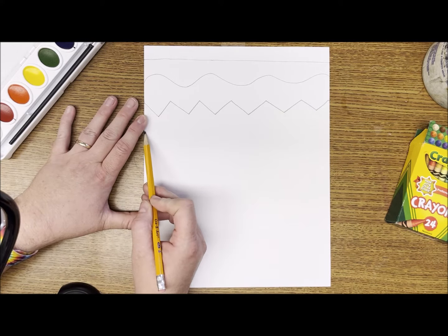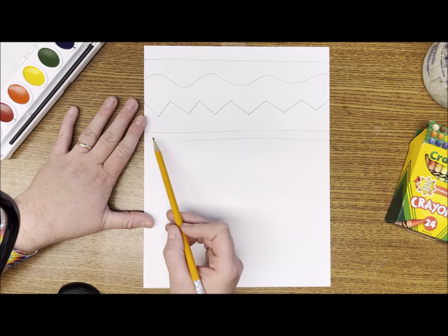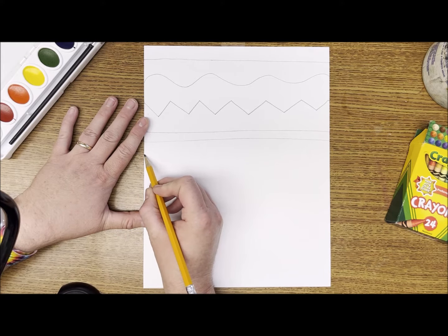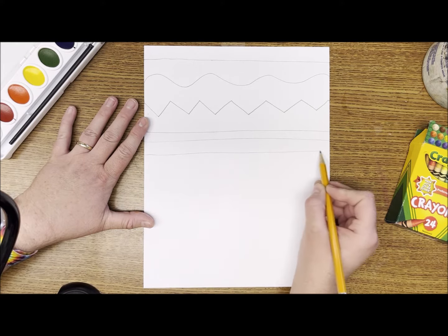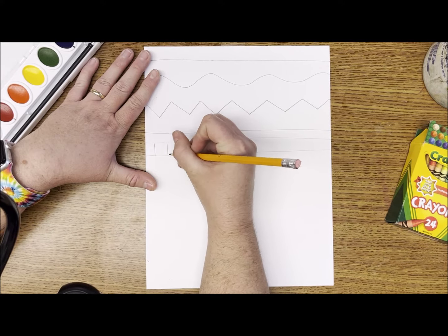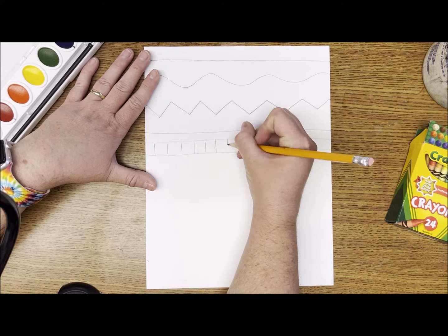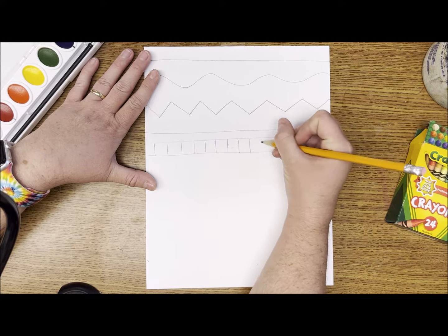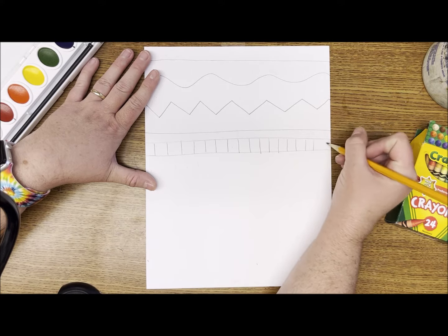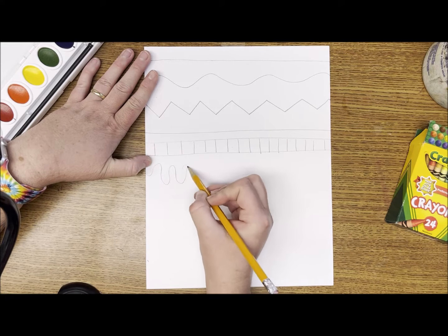Next we're going to draw a thick line, and to do this I'll draw two lines parallel to each other and then later we'll color that in with crayon. Next, the opposite of thick is a thin line. With just the point of my pencil, I'm going to draw some short lines in between my thick and thin line.